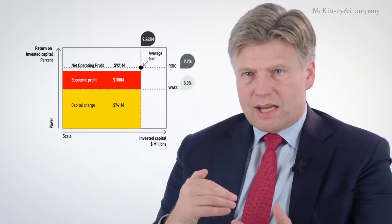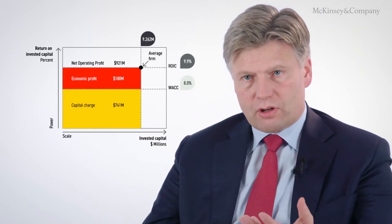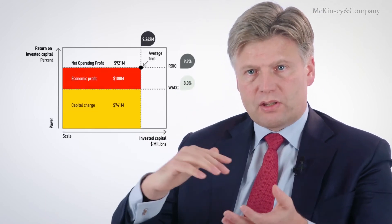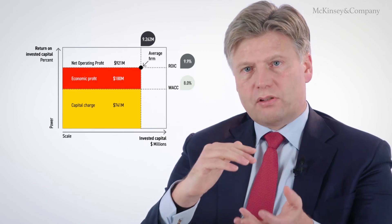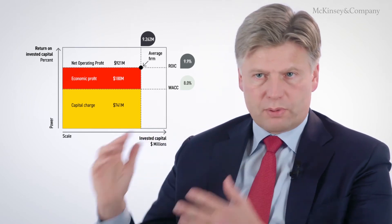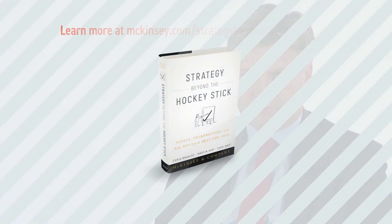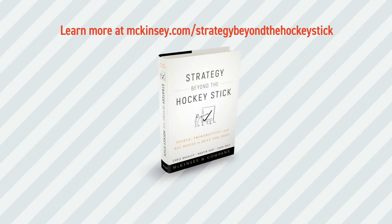So economic profit is in a way kind of easy. It's your operating profit after tax minus the cost of capital times your capital. It's basically the excess absolute margin that you make after you pay your capital.